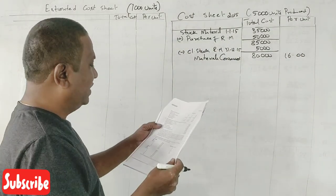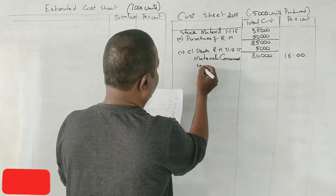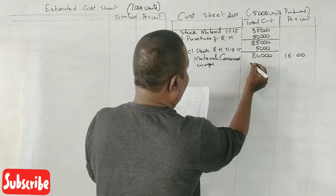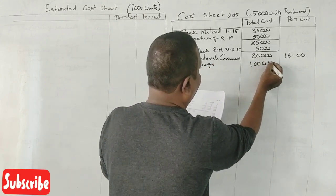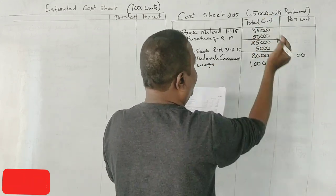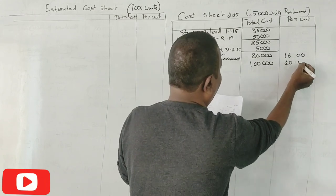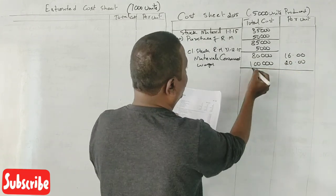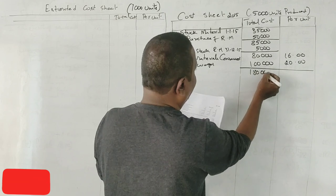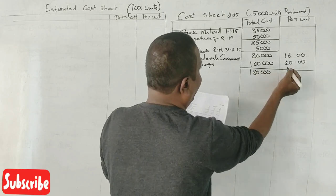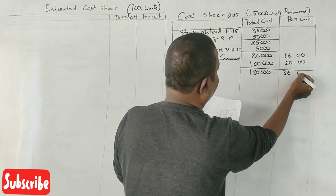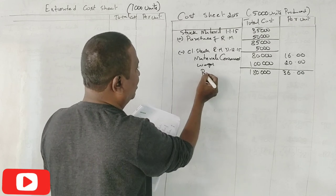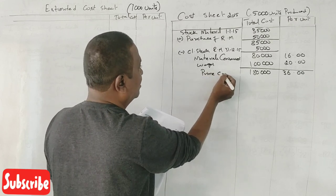Next, what are the wages? The wages amount is ₹1 lakh. 1 lakh divided by 5,000 is ₹20 per unit. Now, what is the total prime cost? ₹1,80,000 total and ₹36 per unit. This is what we call prime cost.